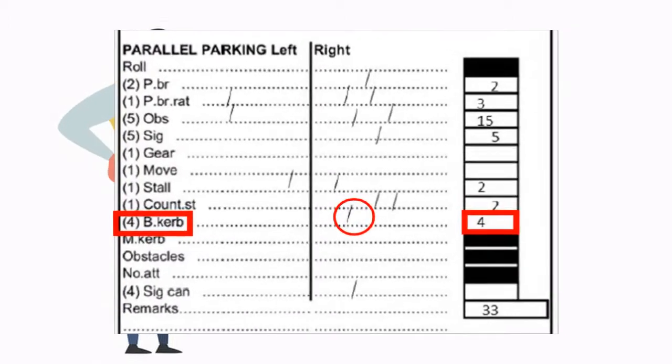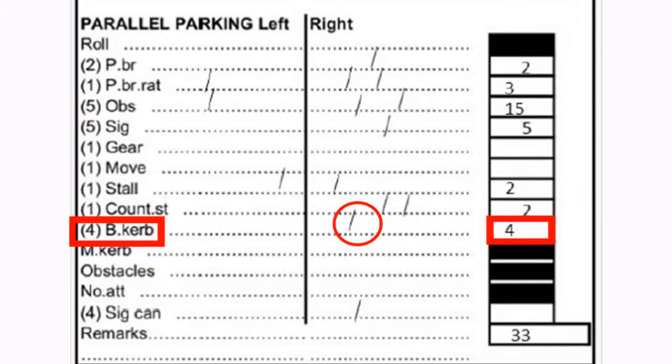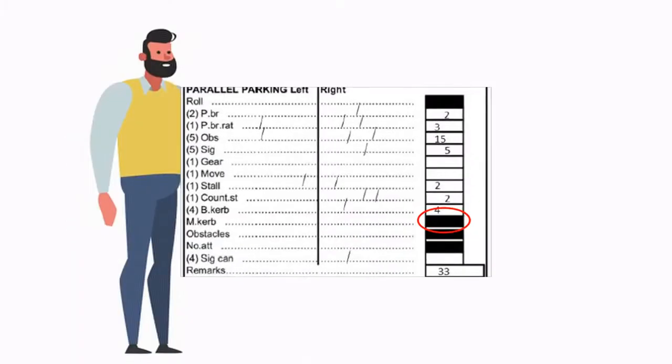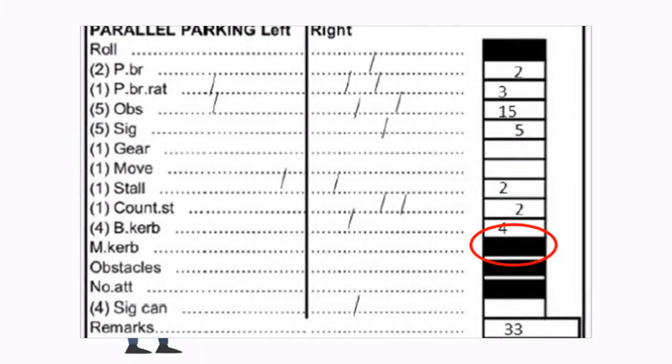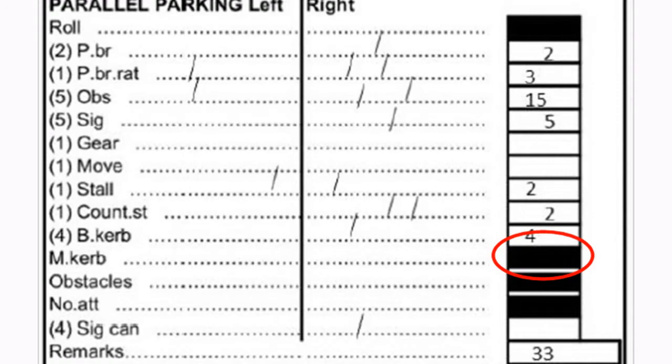Next, the student got four points scored for bumping or touching the curb with a wheel. If the car's wheel is climbing the curb, the test will be stopped. The examiner will draw a circle around the black rectangle for mounting the curb.